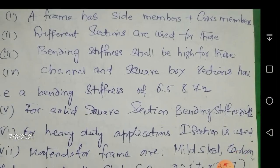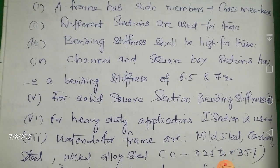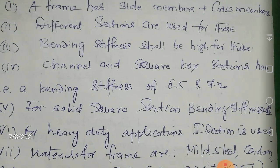A frame has side members and cross members, and different sections are used for these frame elements. A very important point is that the frame should not bend under all the loads it experiences. So the bending stiffness — meaning it should not bend — shall be high for both side members and cross members. This is a concept likely to appear in exam questions.